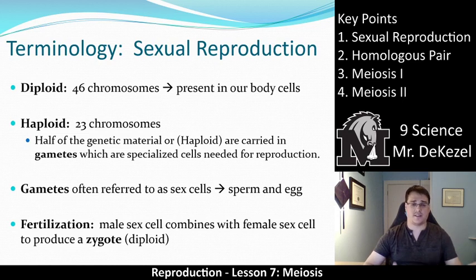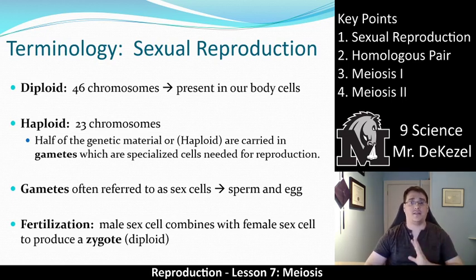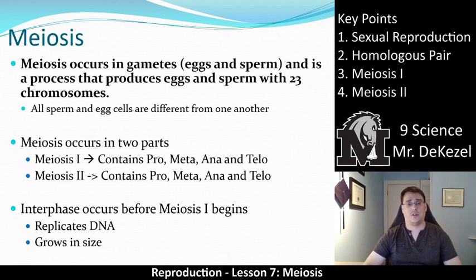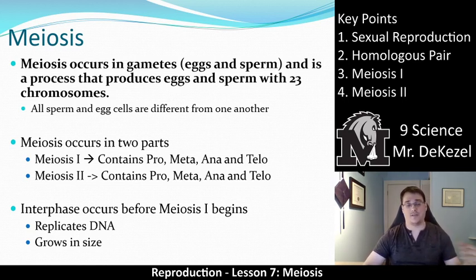Fertilization occurs when the male sex cell combines with the female sex cell to produce a zygote, and we will talk more about that in future lessons. What creates these gametes? It's meiosis. Meiosis occurs in the gametes and is a process that produces eggs and sperm with 23 chromosomes. All sperm and egg cells are different from one another — that's why we get genetic variation in people. Meiosis occurs in two parts: meiosis 1 and meiosis 2.